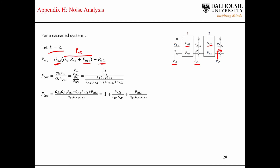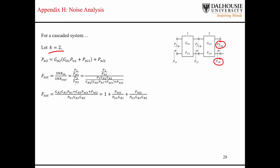We know that noise figure is related to the noise factor, and on a linear scale the noise factor is the ratio of the input SNR to the output SNR. The input signal-to-noise ratio is the ratio of signal power to noise power on the input, and the output SNR is the output signal power divided by the output noise power. We just derived the expression for P sub N3, the noise power on the output of the second stage, and we can substitute that in. After some rearranging, we end up with the equation shown here.